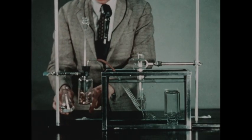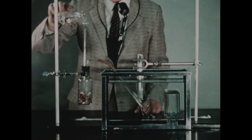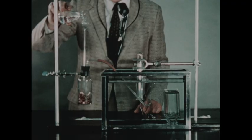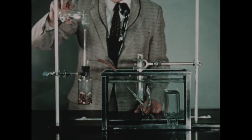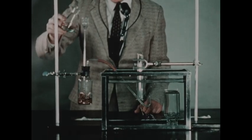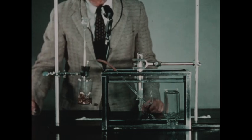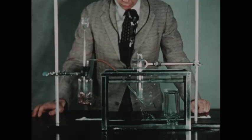In the flask, we have copper turnings. And as we add the nitric acid to the thistle tube, the nitric acid begins to react with the copper, forming nitric oxide.